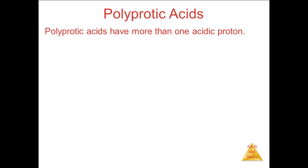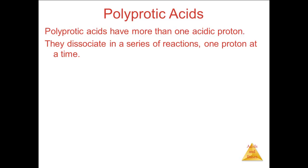Polyprotic acids are acids with more than one acidic hydrogen atom. A polyprotic acid will have a dissociation reaction for each of its acidic hydrogen atoms, which will not all dissociate at once, but rather in a series of reactions called successive dissociations.